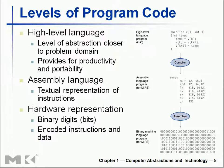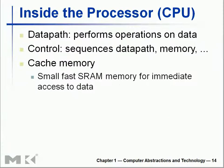Then we will go to the datapath — we will learn about it. Control sequences and datapath are used together. Cache memory is also a separate topic — small, fast SRAM. These are all separate topics that form puzzles and will come together. We will discuss them in detail separately.